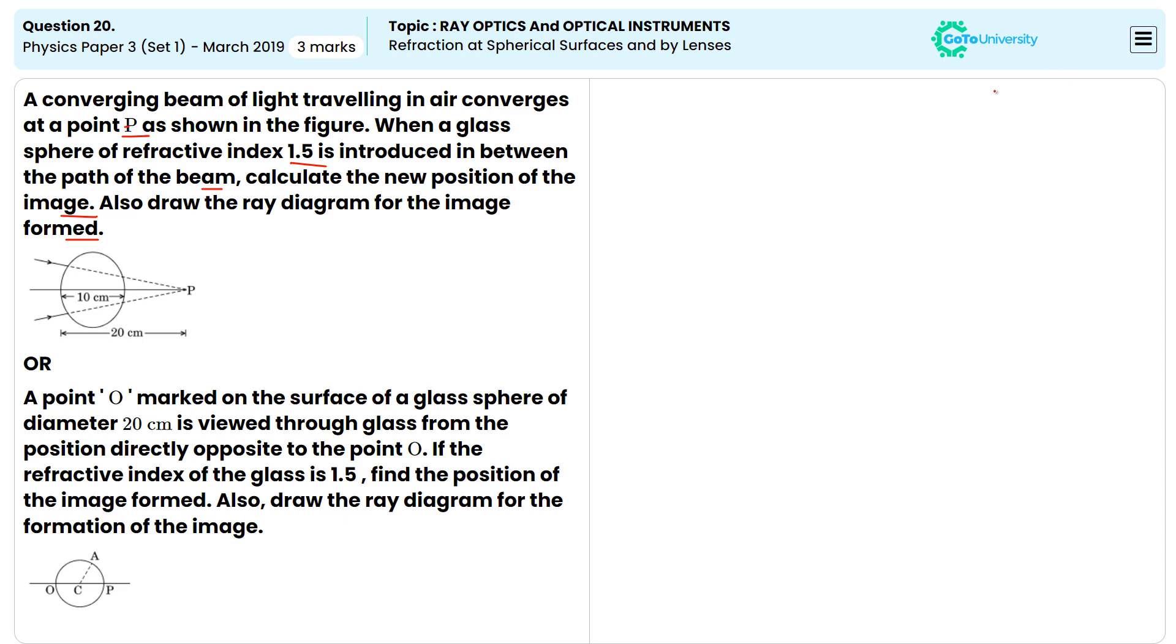That means, here they are given the data: the distance from the point to point P, we can take it as U equals 20 centimeters, N2 equals 1.5, N1 equals 1, and R equals 5 centimeters, that is the radius of the sphere.